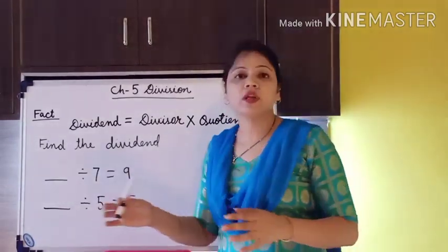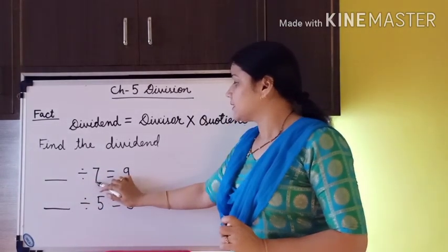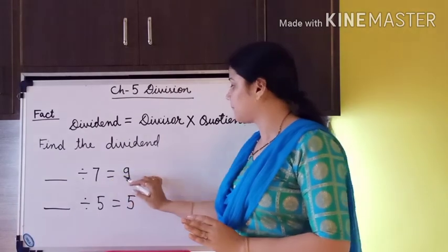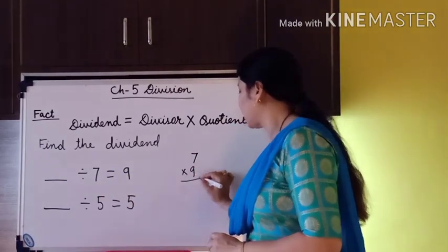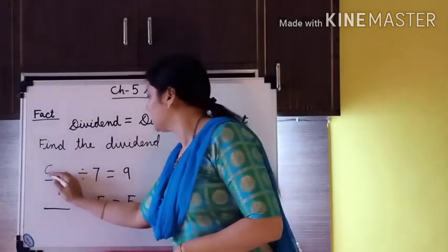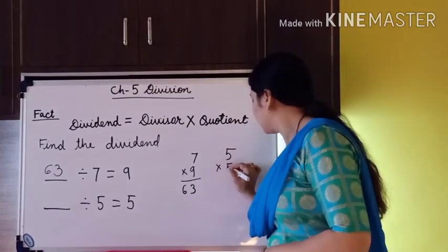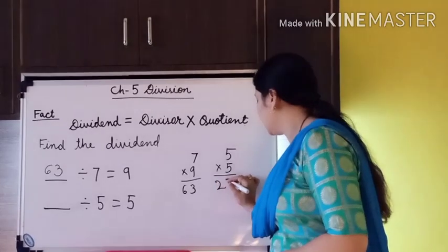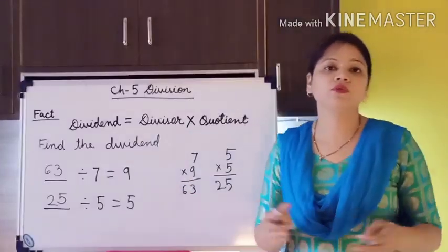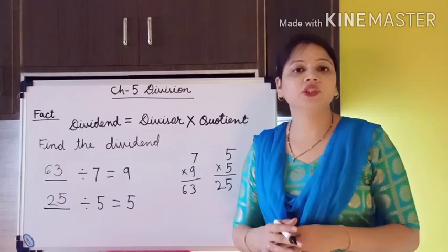To clear the concept again, I have here taken 2 more numbers. We have to find out the dividend — the divisor and quotient are given. We multiply: 7 nines are 63, so we write 63 as the dividend. The second one: 5 fives are 25, so we write 25. That is how you find the dividend using divisor and quotient. If you have any doubts, write in the comment section and I will solve your problem.